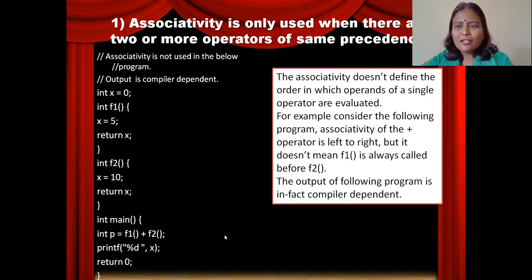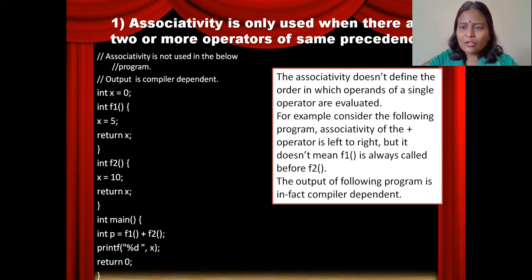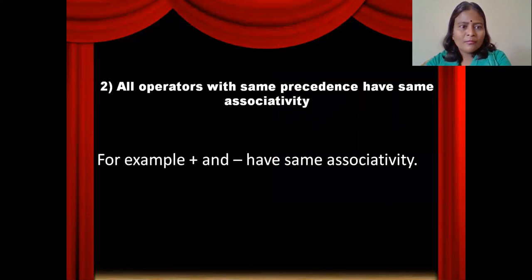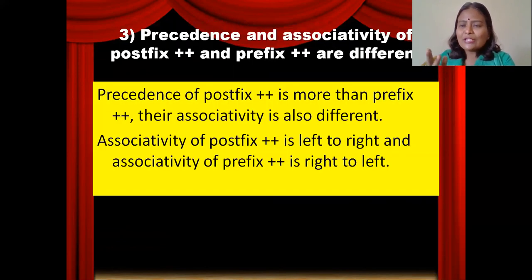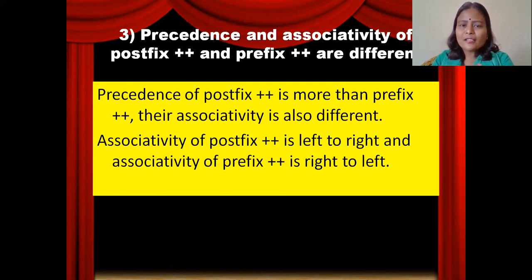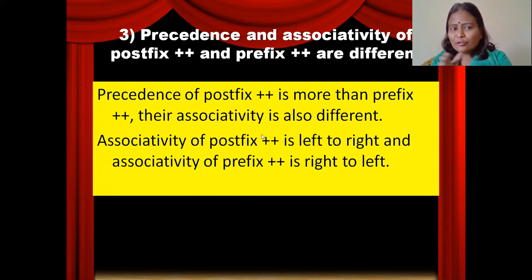For the rest of the time — regular operator computations — we can predict. All operators with the same precedence have the same associativity. Precedence and associativity of postfix and prefix are different: as mentioned in the table, postfix precedence is higher than prefix precedence. Similarly, postfix associativity is left to right, while prefix associativity is right to left.